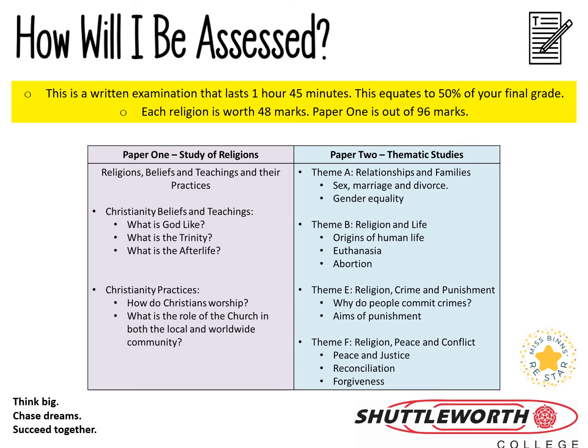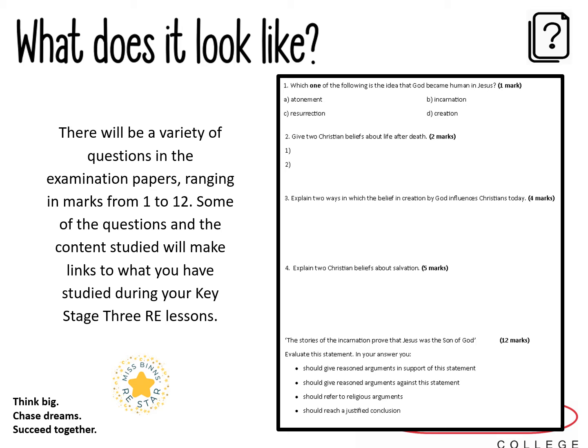In terms of how you will be assessed, you have two papers, both following the exact same structure. You'll have an hour and 45 minutes for each paper, and each paper is 50% of your final grade. There's a variety of different questions ranging from one to 12 marks — one mark, two marks, four marks, five marks, and 12 marks. On screen you can see an example of a test paper done in class — quite a straightforward structure. You might also notice some similarities with content from your Key Stage 3 RE lessons, but we will develop on that throughout.